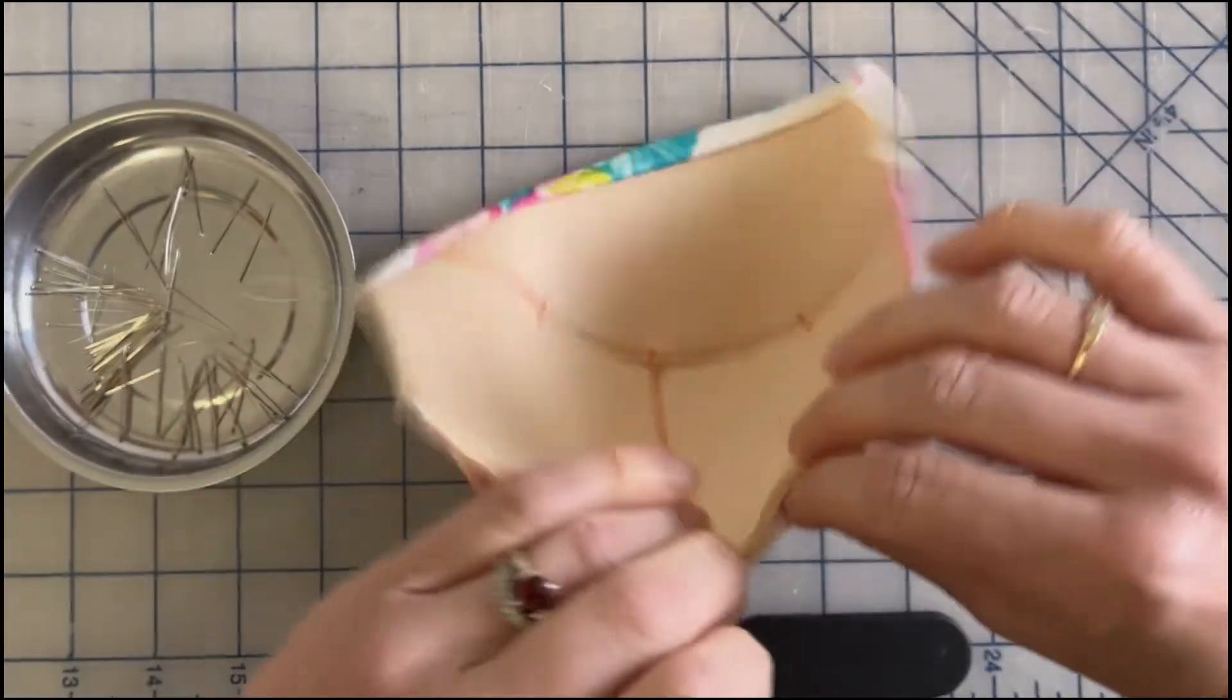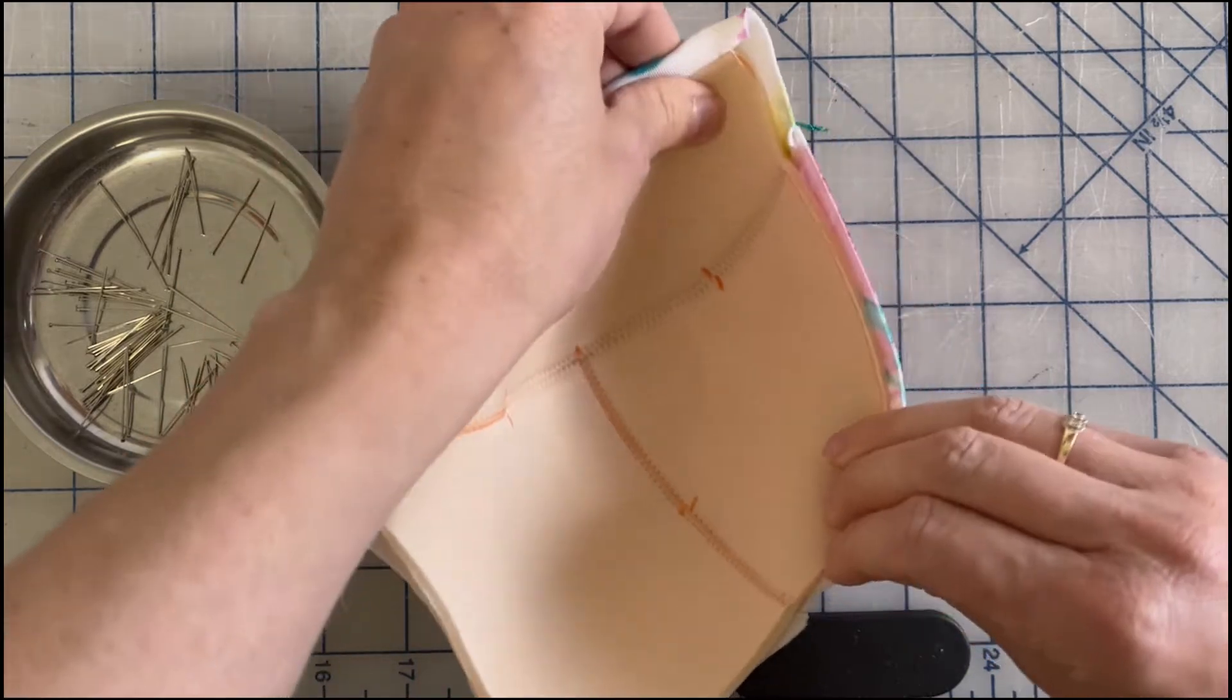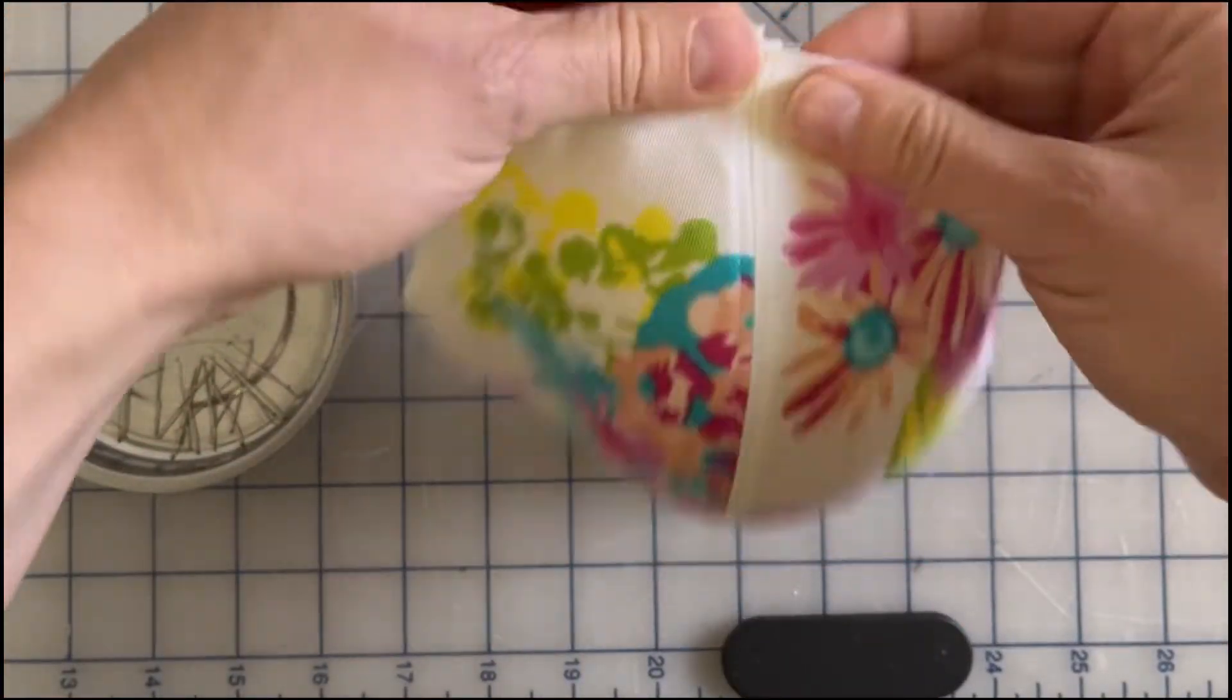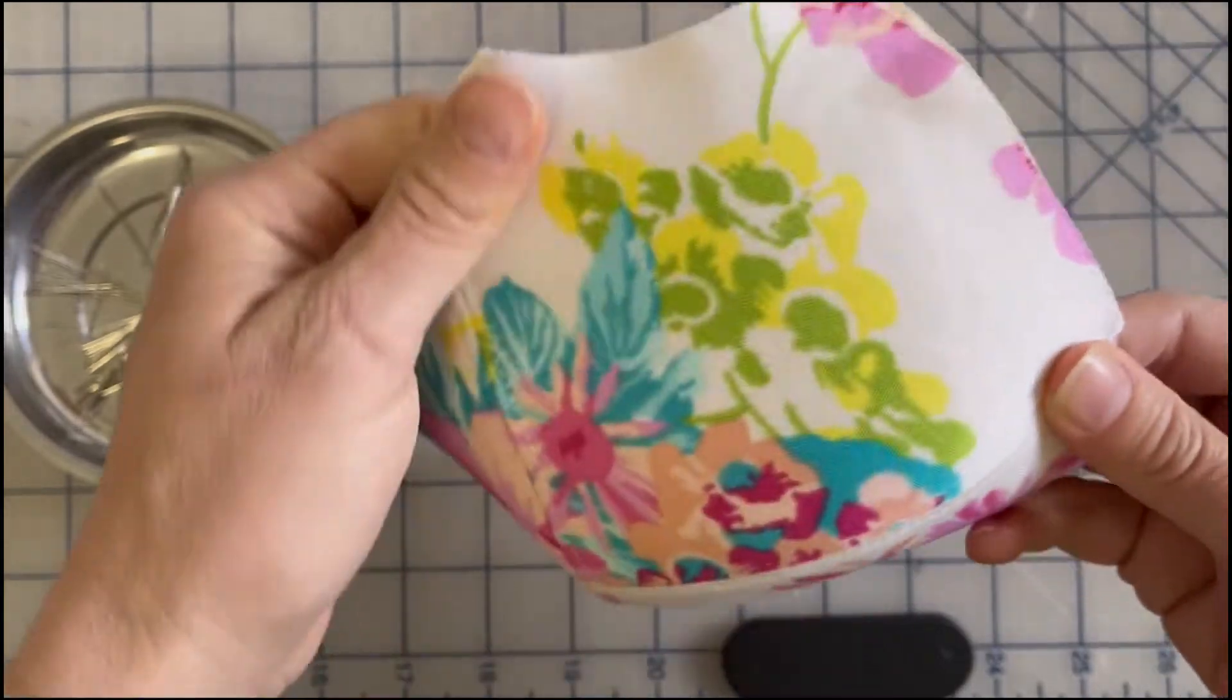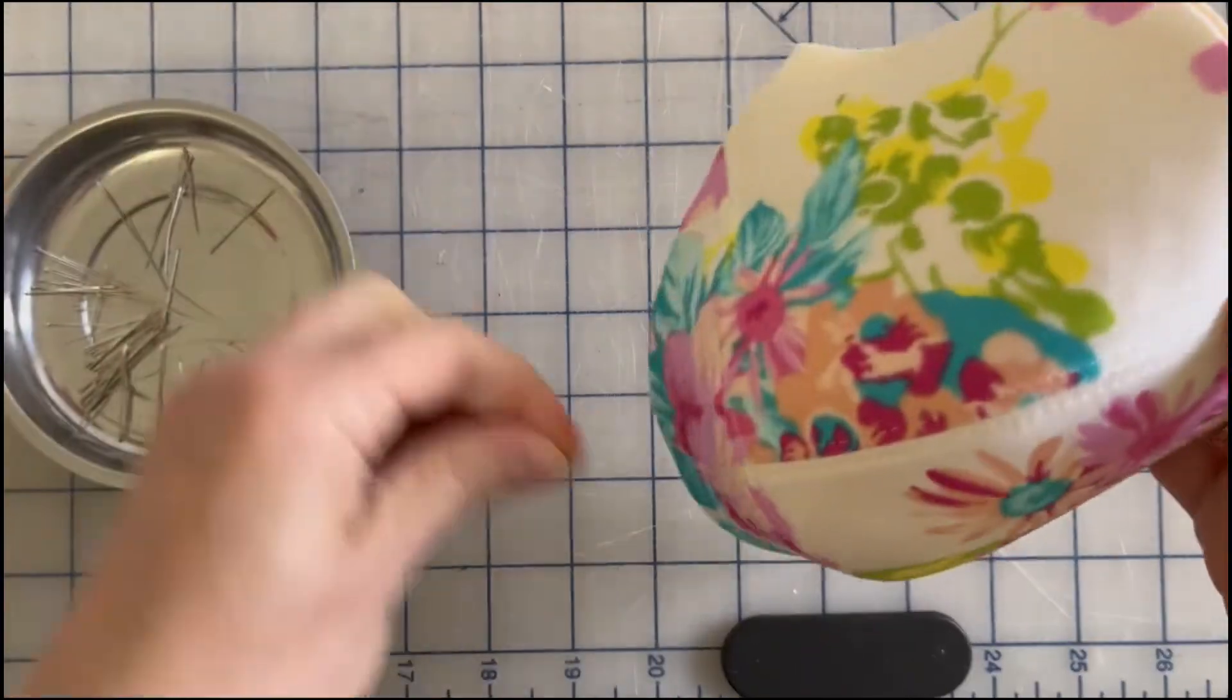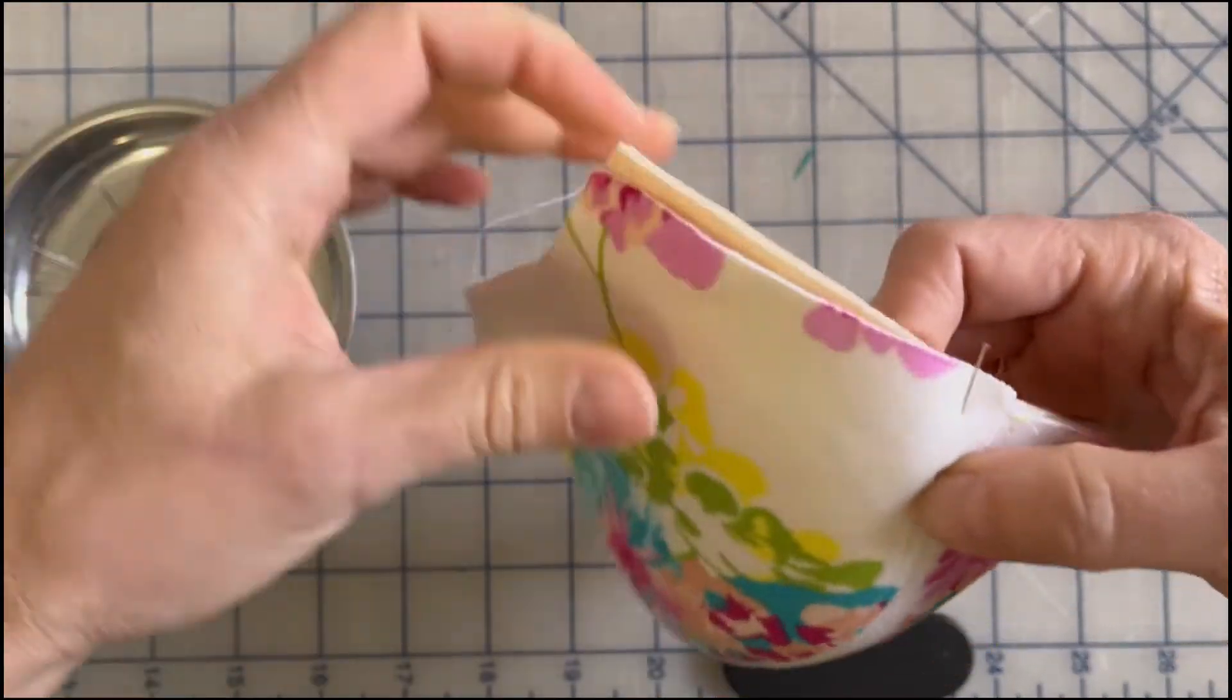Now you don't want to pull it so tight that the foam cup underneath starts to collapse. We don't want that. So you can start maybe sort of in the center of the cup here, and once you get it all covered and it looks nice and smooth but not pulling too much, you can start adding some pins and go all the way around pinning the cover around the edge of the cup.